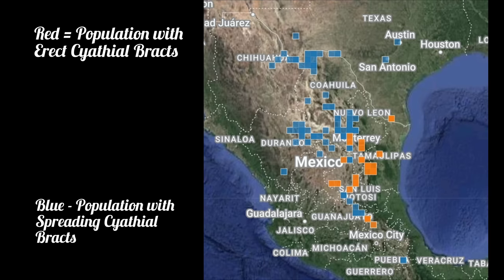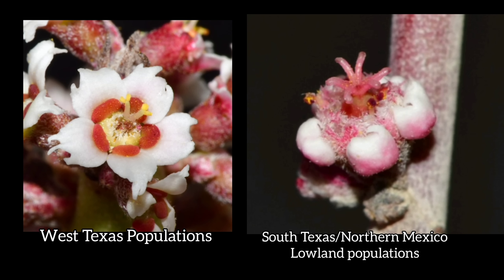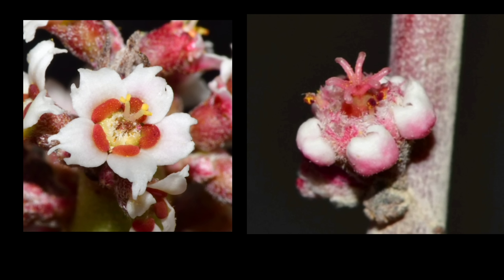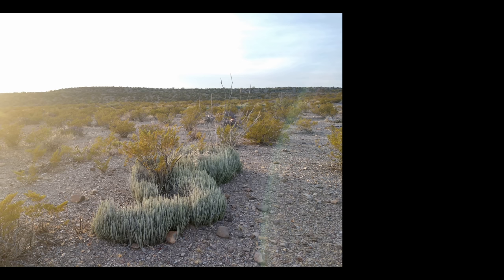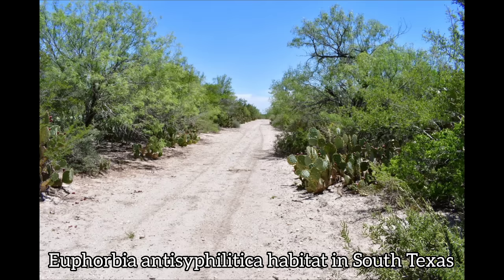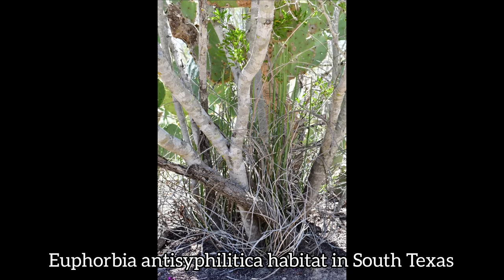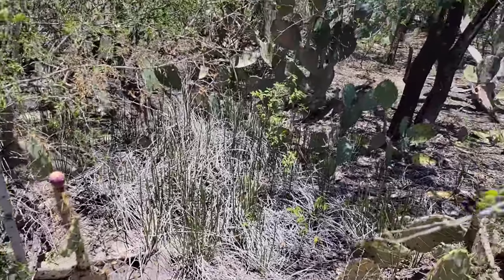That morphological difference can actually be mapped, and that's what Nathan did. The red dots are the erect cyatheal bracts and the blue dots are the plants with spreading cyatheal bracts. This doesn't tell us how this population got here, but it is quite likely a human-assisted dispersal. Since the flowers on this population have erect cyatheal bracts, it tells us this population came from further south rather than west Texas — basically transported here by native Americans who brought it across the Rio Grande, putting the plants in the ground to use as stock plants for wax, soap, or food.